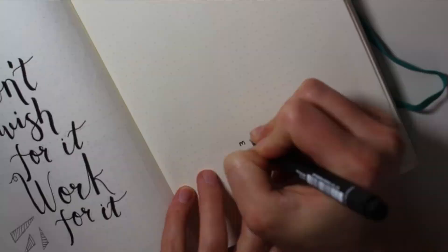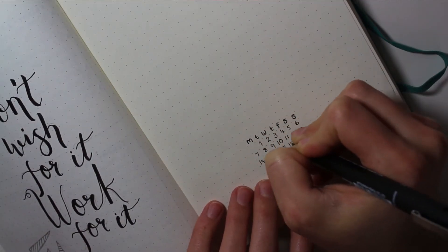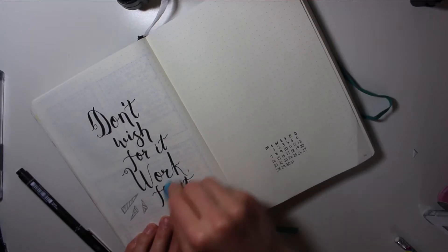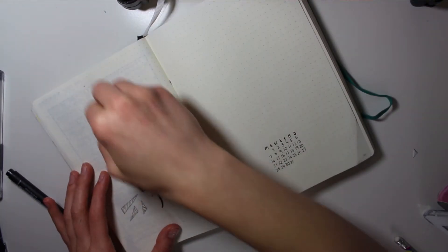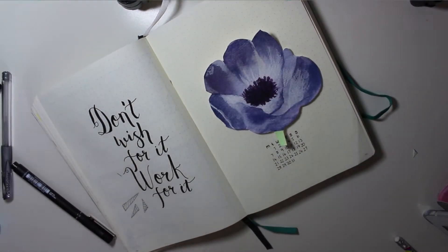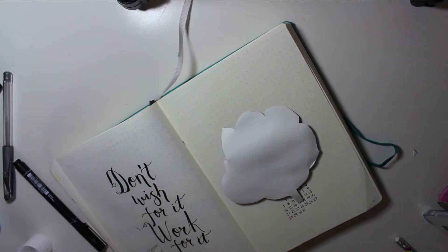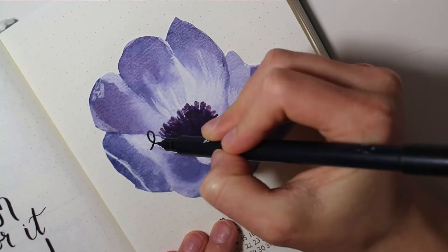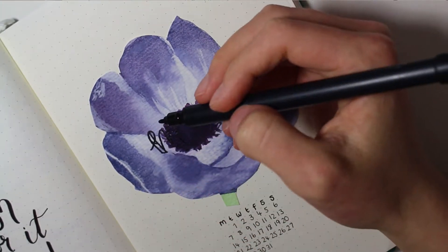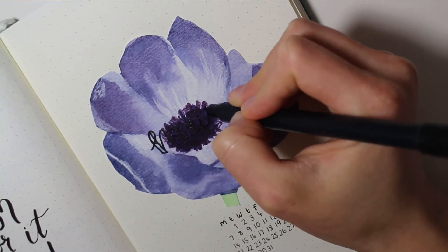For my monthly overview page, I just do this pretty much the same every time, except I obviously do a different flower or whatever I'm really feeling that month. This time I did this purple poppy and then I'm using the same pen to write May on it and it kind of isn't very clear obviously because it's black going on to dark purple.